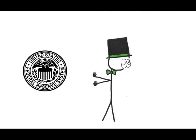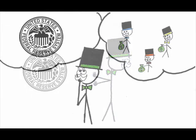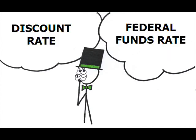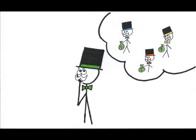To borrow money, a bank can go to other commercial banks or they can go to the Fed. Borrowing from other banks means entering the federal funds market and being subject to the federal funds rate — the interest rate that banks charge each other. Borrowing from the Fed means paying the discount rate, or the rate at which the Fed lends to member banks. You'd think the borrowing bank would choose the lower interest rate, but oddly enough, even if the discount rate is less than the federal funds rate, a bank still may go to the federal funds market for the loan.